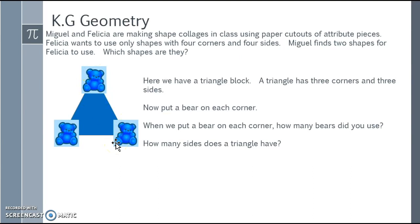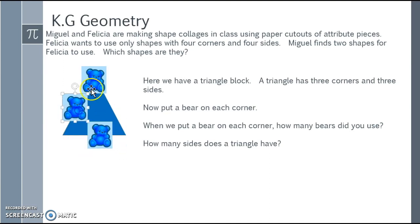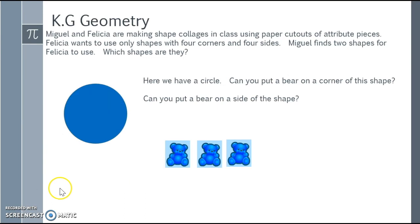So a triangle has three corners. Moving the bear to the sides, we see one, two, three sides as well. Here we have a circle — can you put a bear on a corner or on a side? Of course we can't, because circles do not have sides and circles do not have corners. That's why the bears have nowhere to go.